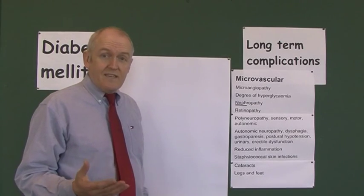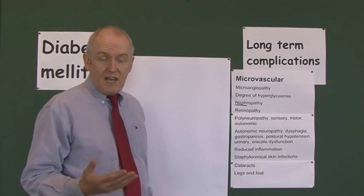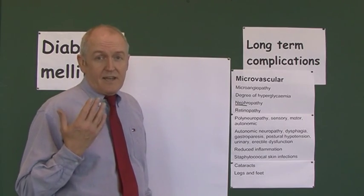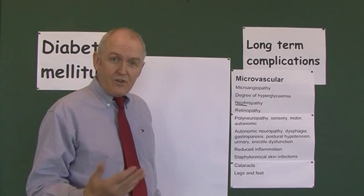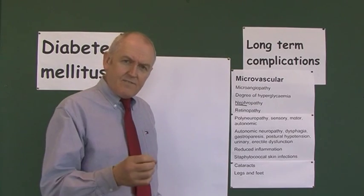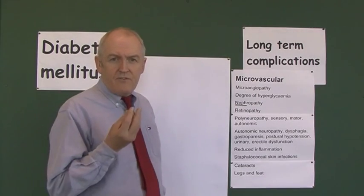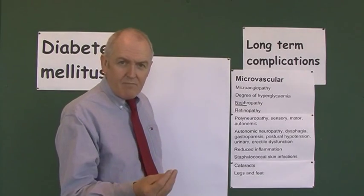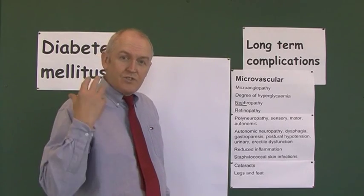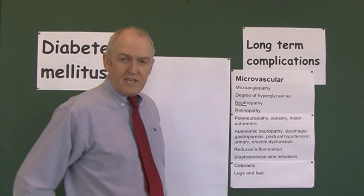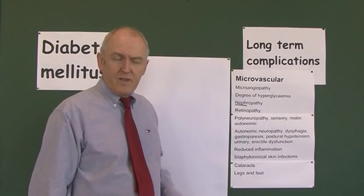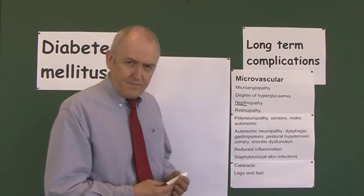Now, as you know, the retina is the light-sensitive area at the back of the eye. It contains rods and cones, the light-sensitive cells, and these convert the light impulse into an electrical impulse, which goes to the optic nerve and onto the occipital lobe of the brain, where it's interpreted as vision.